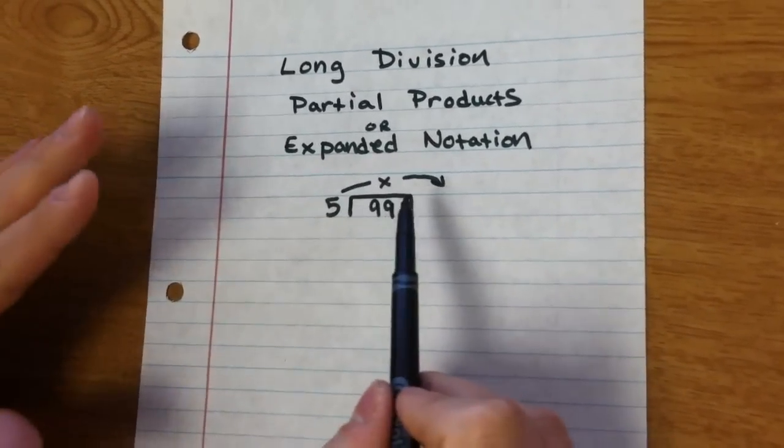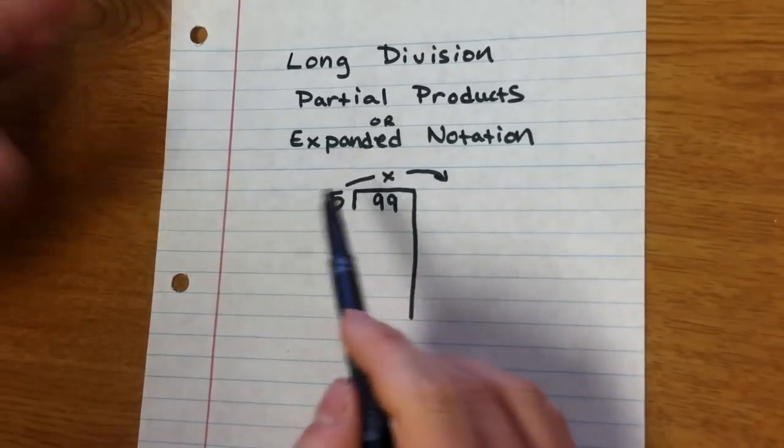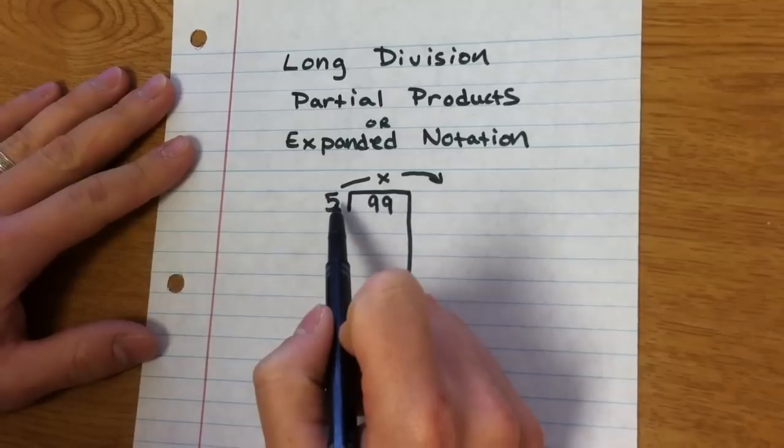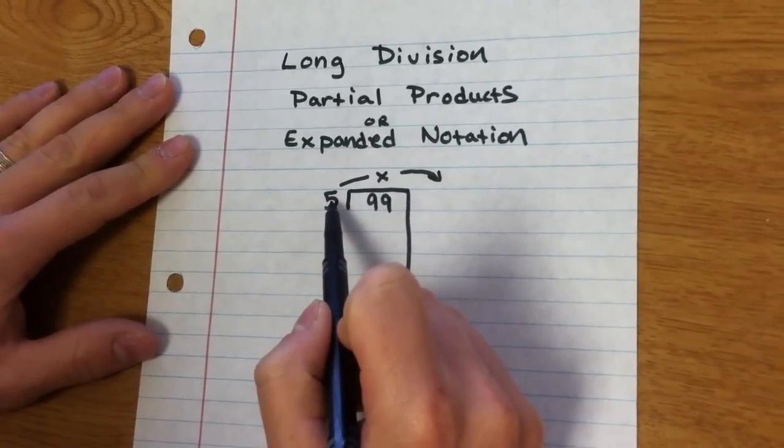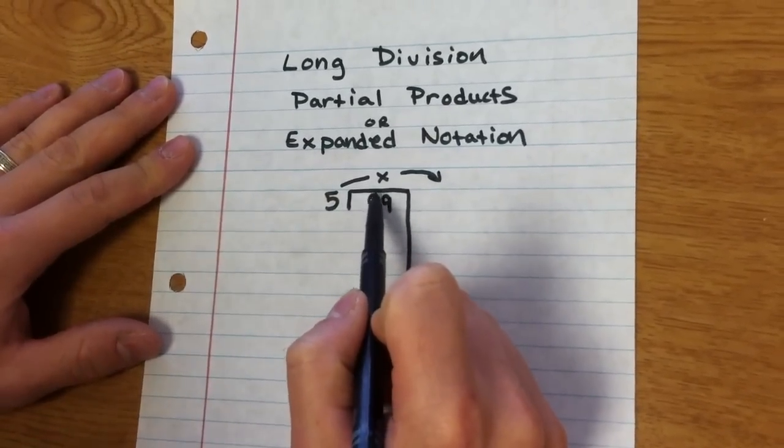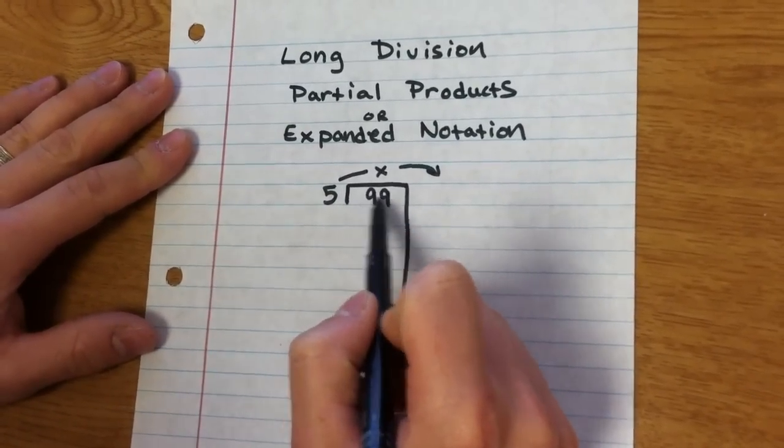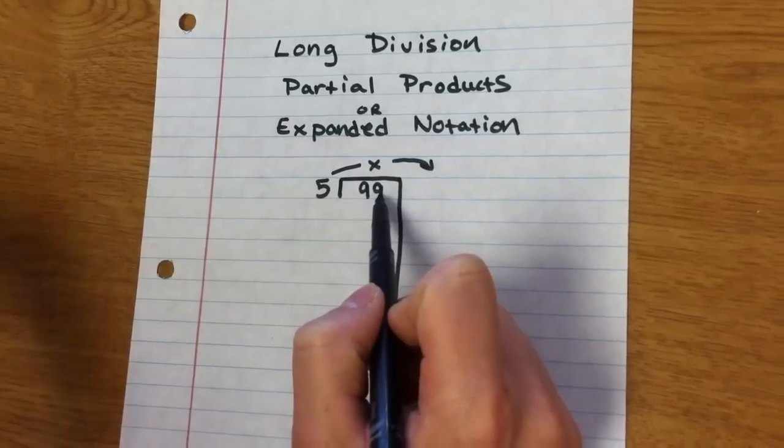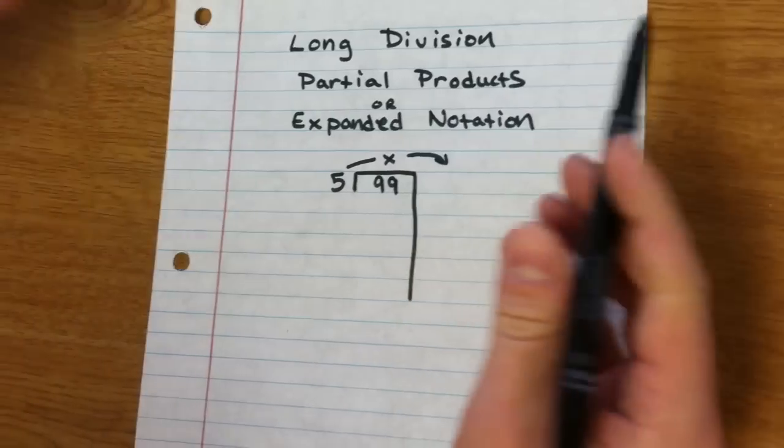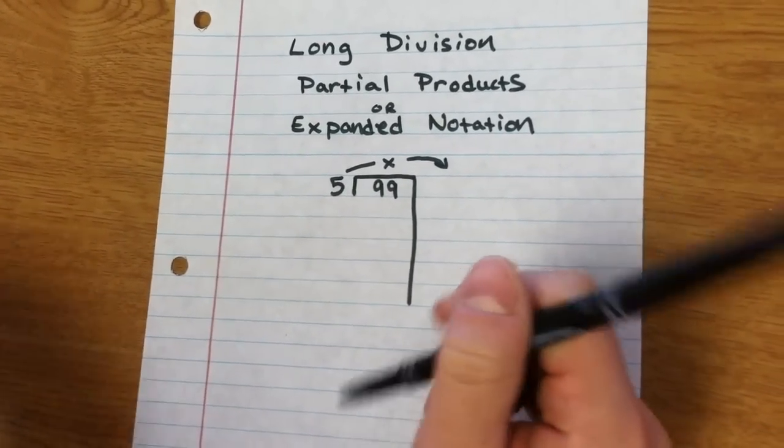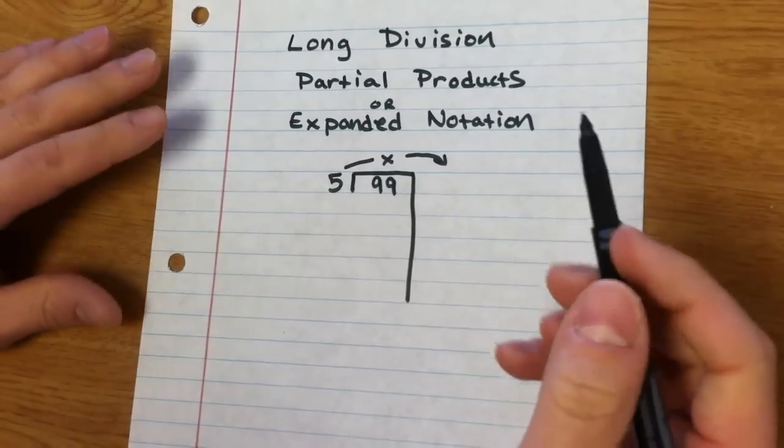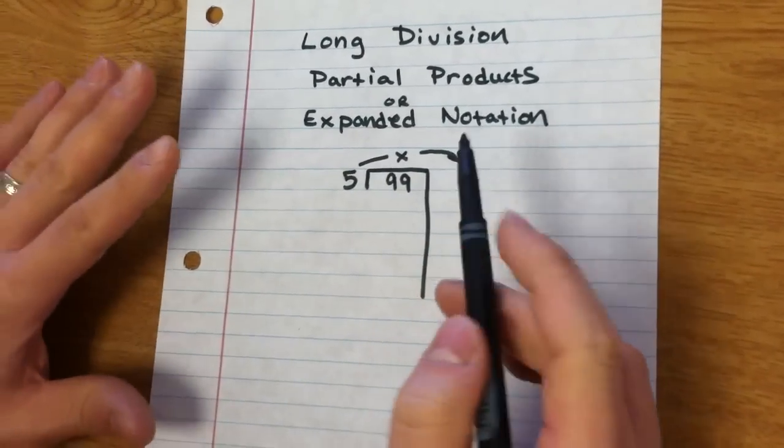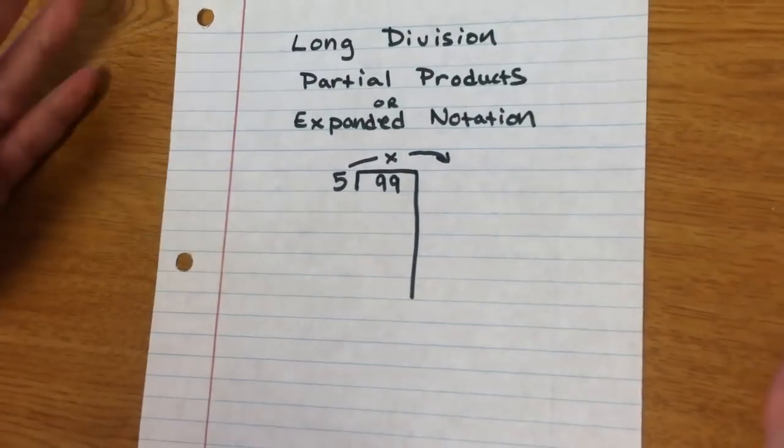One difference that this particular method has compared to the traditional algorithm is that in years past, we would have said, how many times does 5 go into 9? But this really isn't a 9. It's really 90. And so we were giving them misinformation. It really was all about memorizing steps. And it really didn't apply to math concepts that we're learning in class. This one's a little bit different. They're going to apply what they know to figure out what they don't know.